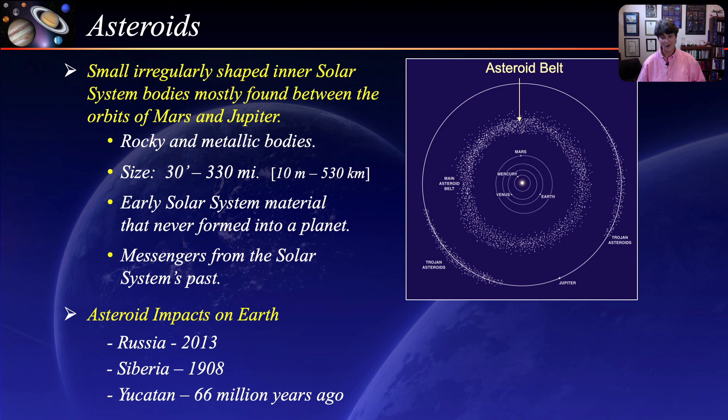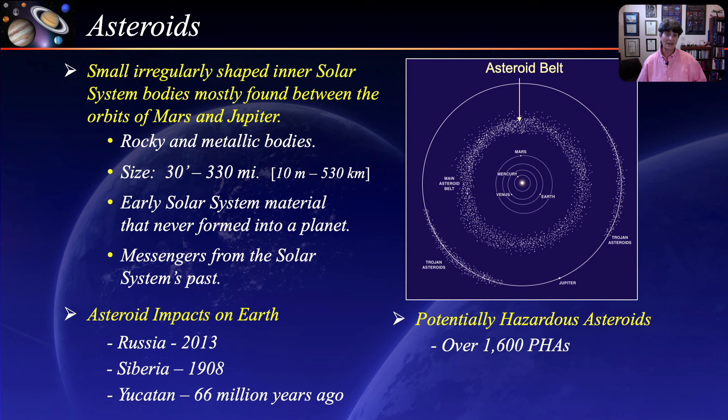Because of this possibility, there are various search programs to find and identify potentially hazardous asteroids. To date, they have identified over 1,600 of these asteroids. Fortunately, none of them are currently on a collision course with us — so far.